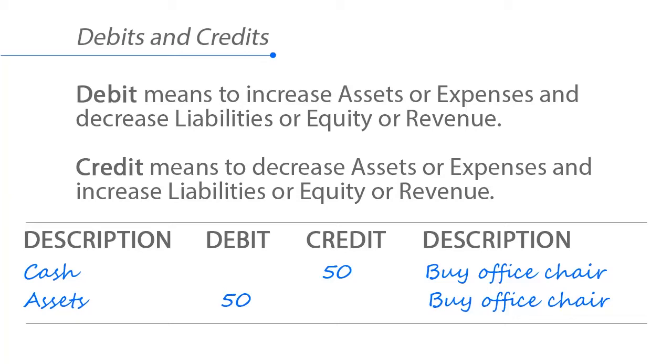Again, crediting cash means reducing it, and debiting assets means increasing assets.